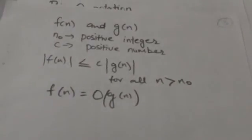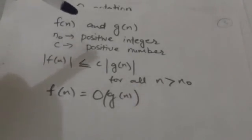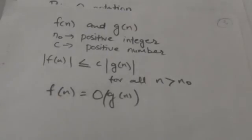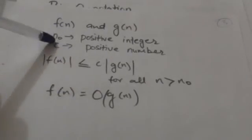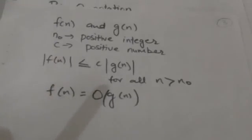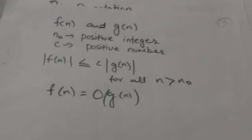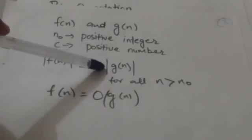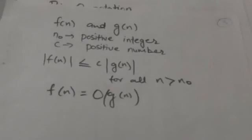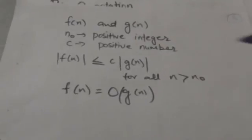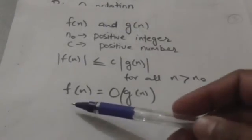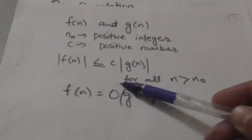Suppose there are two functions f(n) and g(n) defined on the positive integers, and there exists a positive integer n₀ and a positive number c such that for all n greater than n₀, the value of f(n) is less than or equal to c times g(n). Then we can relate these two functions as f(n) equals O(g(n)).